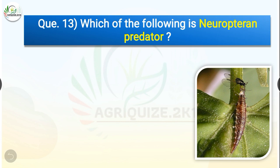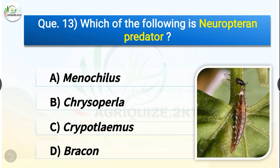Question number thirteen: Which of the following is a Neuropteran predator? The options are Menochilus, Chrysoperla, Cryptolaemus, or Bracon. The correct answer is option B — Chrysoperla. Chrysoperla, or green lacewing, is a Neuropteran predator and a potent predator of many sucking pests.